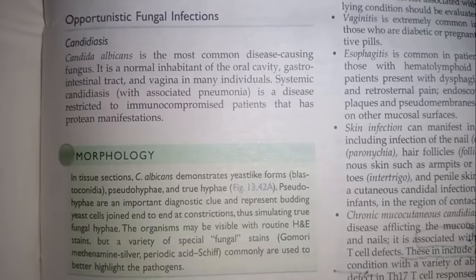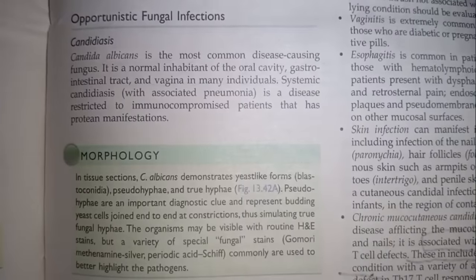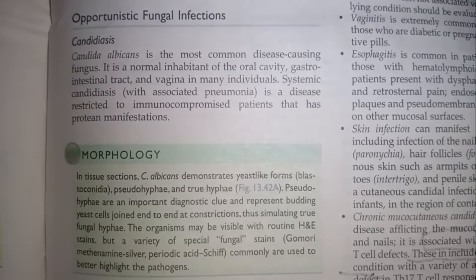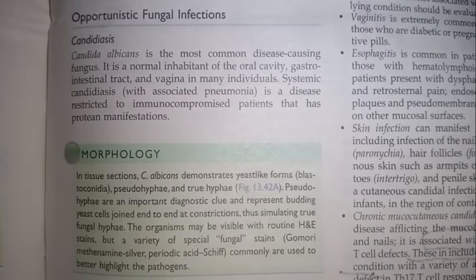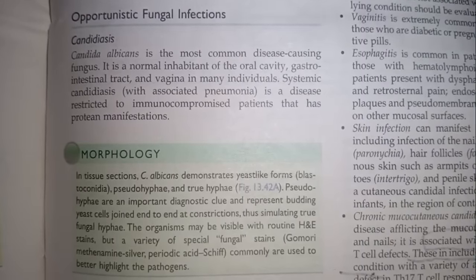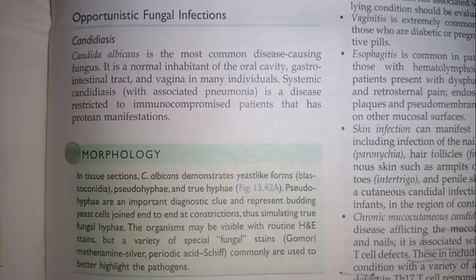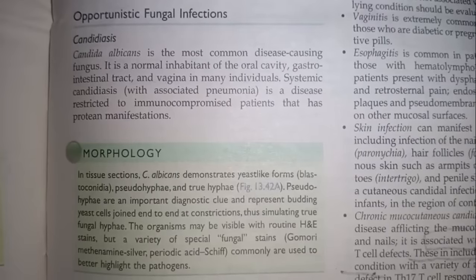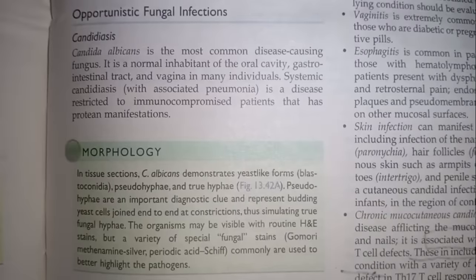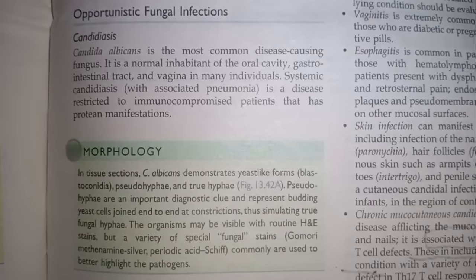It affects the oral cavity and the GI tract, and it is associated with pneumonia. This disease restricts immunocompromised patients — patients who are immunocompromised, whose immune system doesn't work properly.